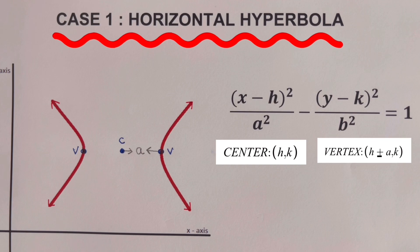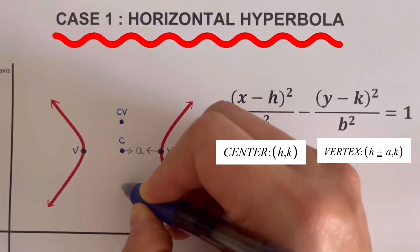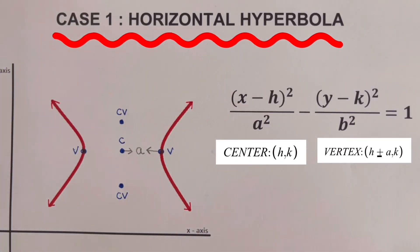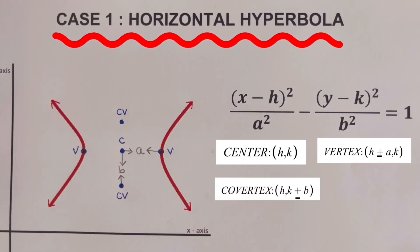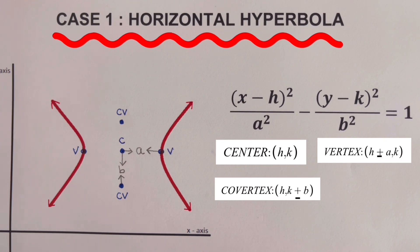We also have co-vertices, and we're going to label them in this picture. The distance from the center to one co-vertex is B. The coordinate of the co-vertices is H comma K plus or minus B. The next part of this horizontal hyperbola are the asymptotes. To easily draw the asymptotes, we are going to draw a rectangle that covers these four points — the two vertices and the two co-vertices.